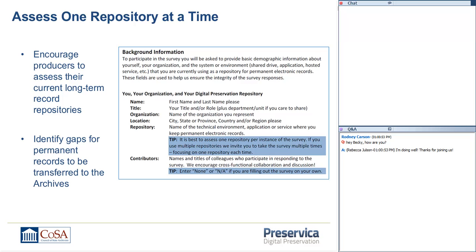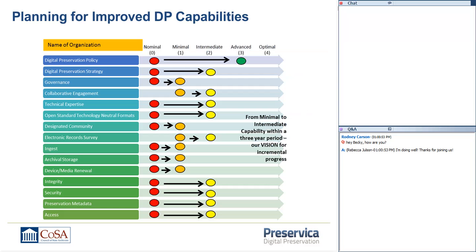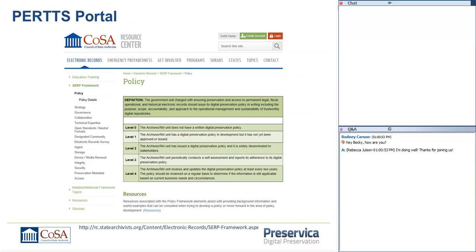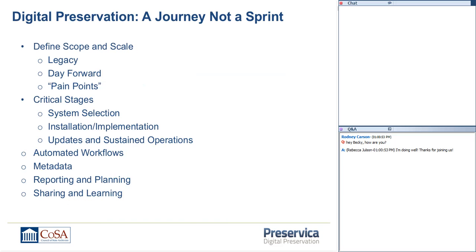Even a three-year strategic plan to move from where they are to where they want to go may still not get you to the conforming level, so we understand this is a significant journey and a long haul. We're thrilled with the PERTS portal, which leverages the components from the model but also provides a lot of resources and examples for you to leverage when you're ready to advance to the next level — whether you want examples of policies, procedures, or strategies, they're there on the PERTS portal for you to use. Let me turn this back to Charles to sum up.